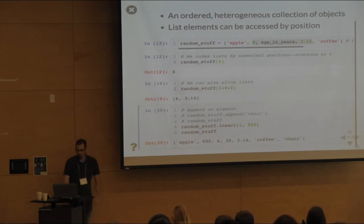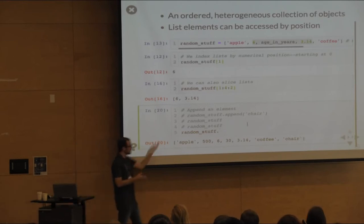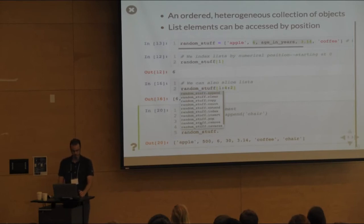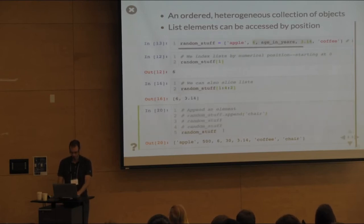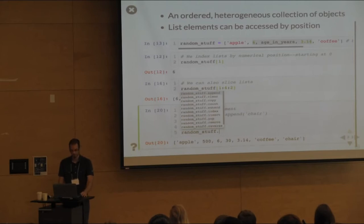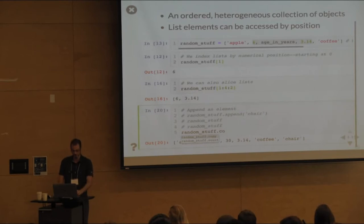Another tip: if you ever wonder what a list or any object can do, you can type a period then Tab — it'll show all the things that object can do: append, clear, copy, count, extend, and so on. You can also start typing and it'll do completion — type 'co' then Tab and it shows only 'copy' and 'count.'